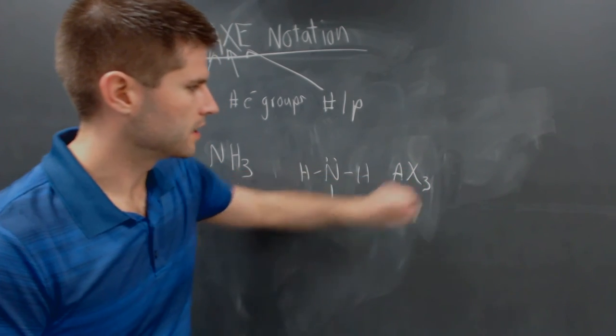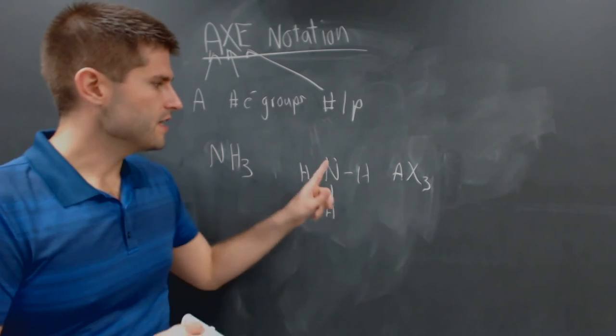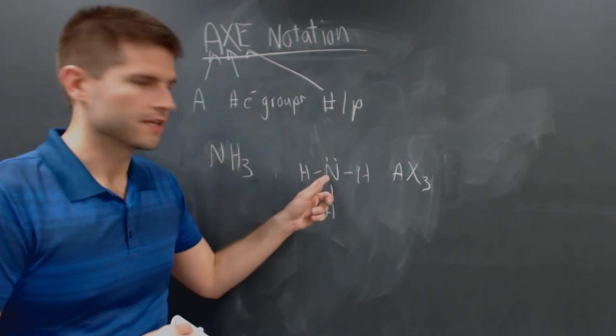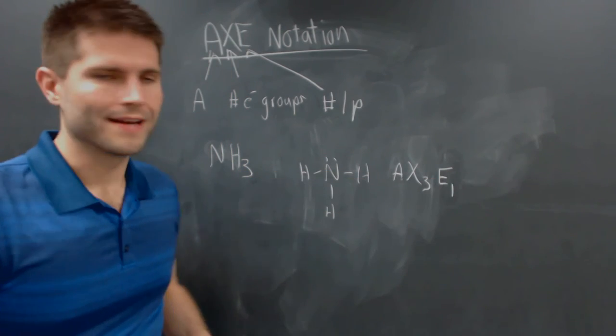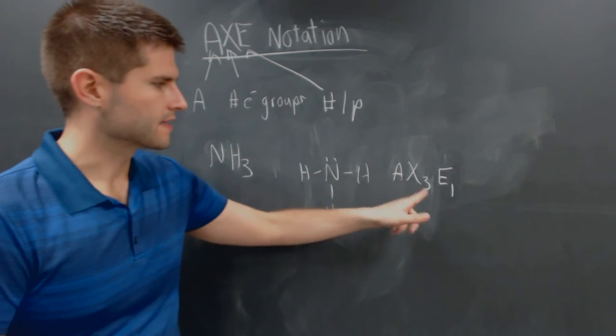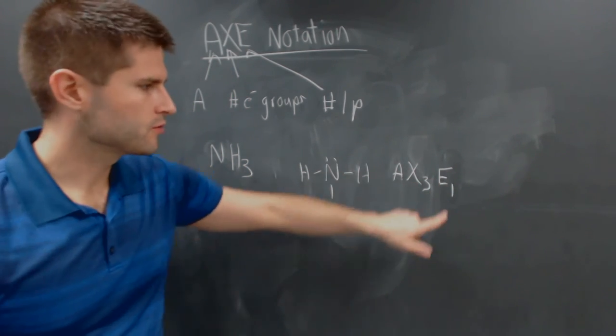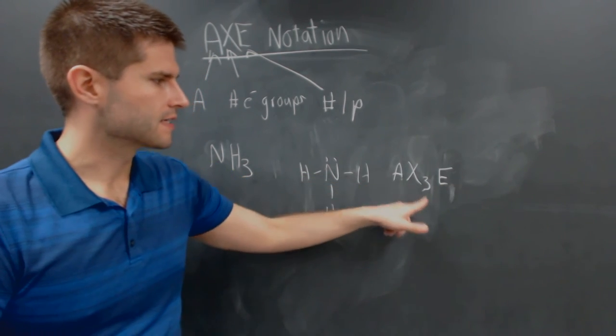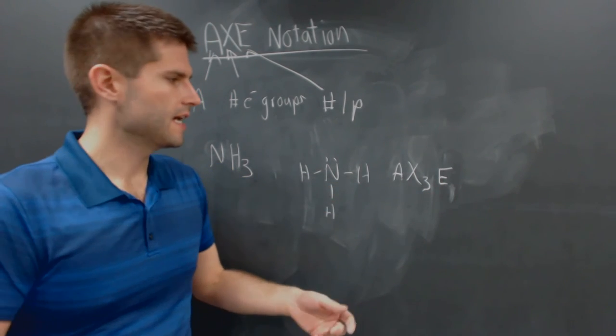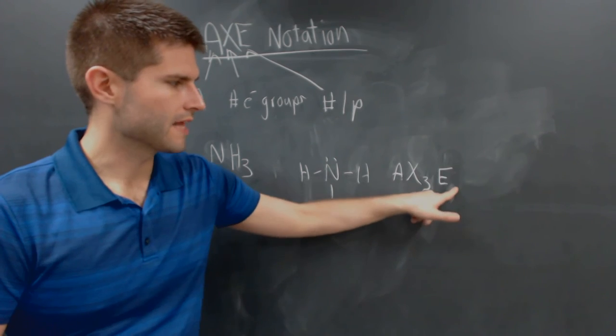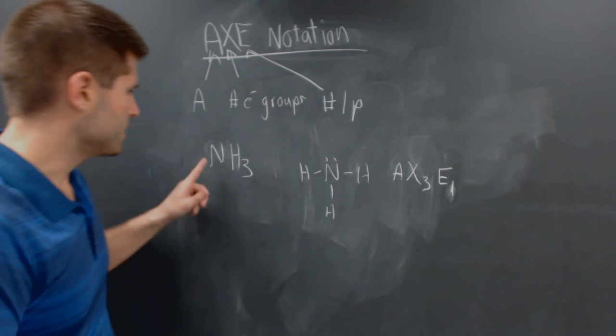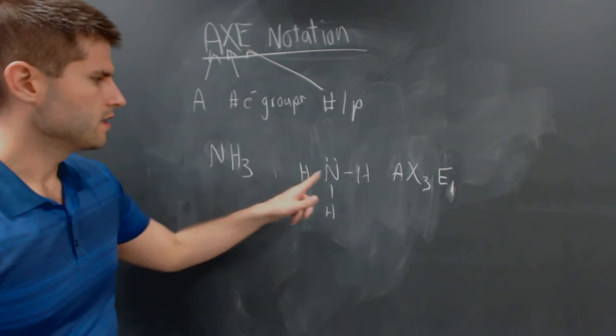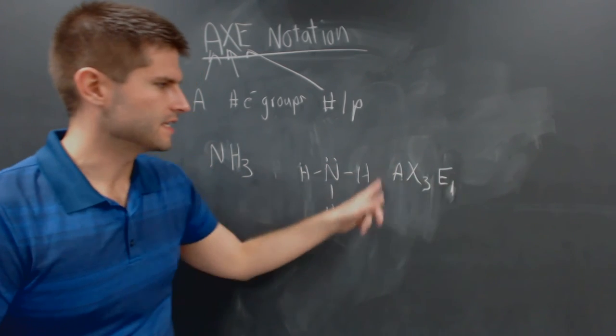So we're going to put a subscript three. And then we see that there's a lone pair on the central atom. So we, in this case, have to write an E sub one. So we have an AX3E1. Sometimes you'll just see this as AX3E. Just like a lot of cases in chemistry, we don't write that one sometimes, but I will generally write that one down there. So here we have NH3. This is the structure. This is the AXE notation.